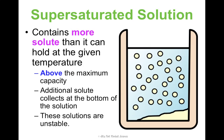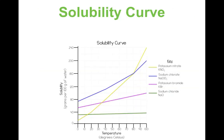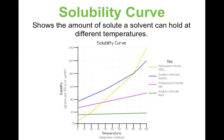Chemically speaking, supersaturated solutions are considered unstable. The skill I really want you to grasp is understanding a solubility curve — it's really important that you can look at one of these graphs and answer questions about them. A solubility curve basically shows the amount of solute a solvent can hold at a bunch of different temperatures. Let's break this down before we do some practice in class.